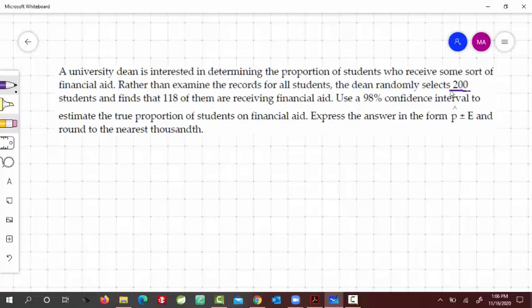and round to the nearest thousandth. So this means that n is 200, and 118 of them are receiving financial aid, so that's our x value.